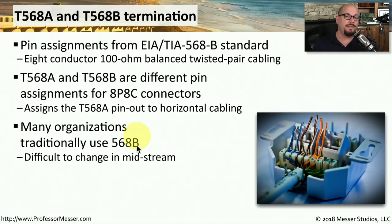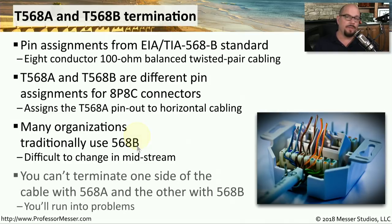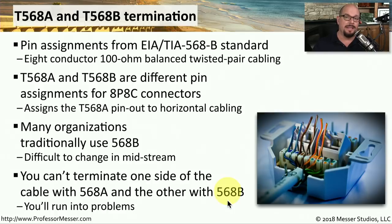The EIA-TIA standard specifies two different ways to punch down the pinouts for an ethernet connection. The standard specifies T568A for horizontal cabling runs on the same floor of a building, but many organizations have chosen to use 568B. Once you run one type of cabling standard in your environment, you tend to use that same standard everywhere. What you don't want to do is terminate one side of the cable with 568A and the other side with 568B, as this will create problems — you won't be able to run ethernet at gigabit speeds and may encounter confusion when troubleshooting.